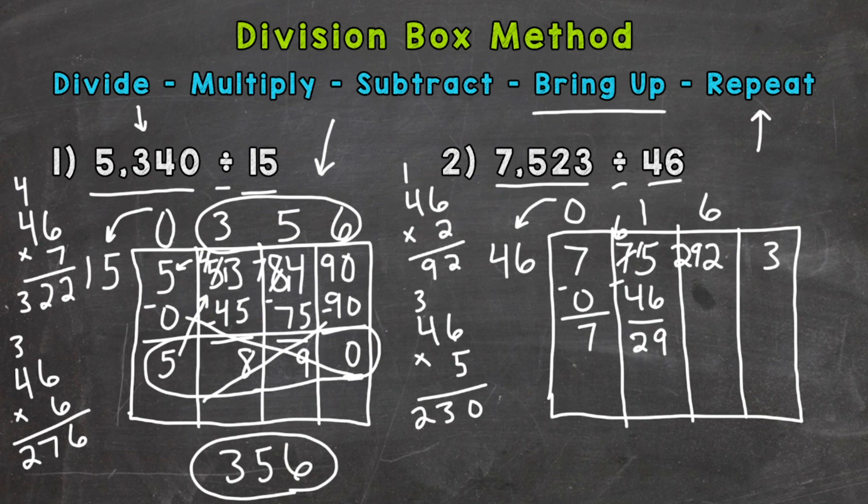So 7 went over. 6 groups of 46 out of 292 is as close as we can get. So we need a 6 here. Now we multiply 6 times 46, which we already did over here, is 276. So subtract. So we need to borrow here. 12 minus 6 is 6. 8 minus 7 is 1. And then 2 minus 2 is 0. So we end up with 16 that we need to bring up.